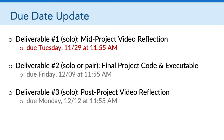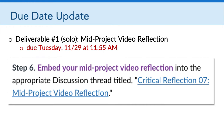That mid-project video reflection — you're probably wondering where to post that. I have added a discussion thread called Critical Reflection 7, Mid-Project Video Reflection. All you have to do is go to the Game Production Project 2 assignment, and then in step six you'll see the link to Critical Reflection 7, where you can post your video reflections.